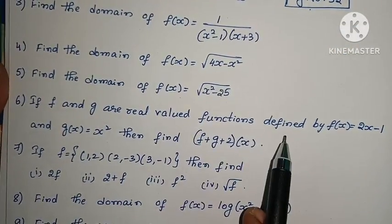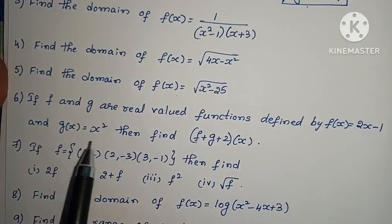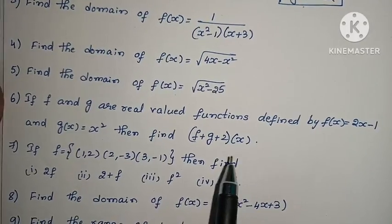Sixth one: If f and g are real valued functions defined by f(x) = 2x-1 and g(x) = x², then find (f+g+2)(x).